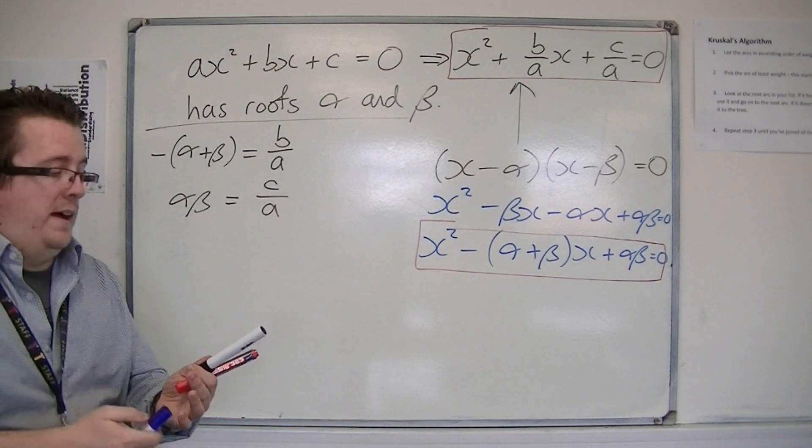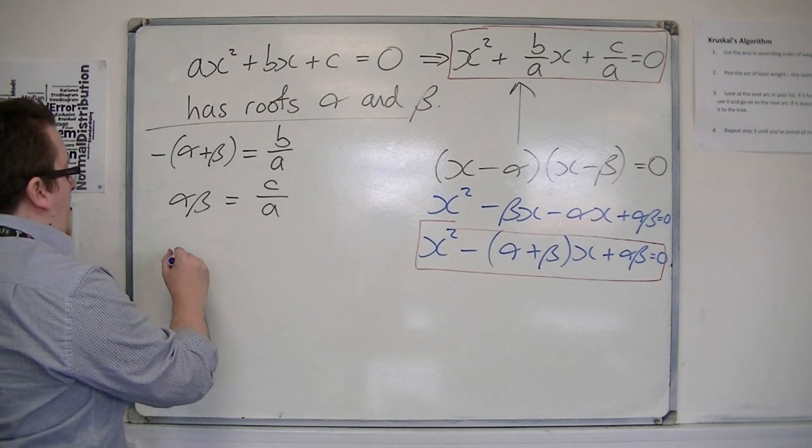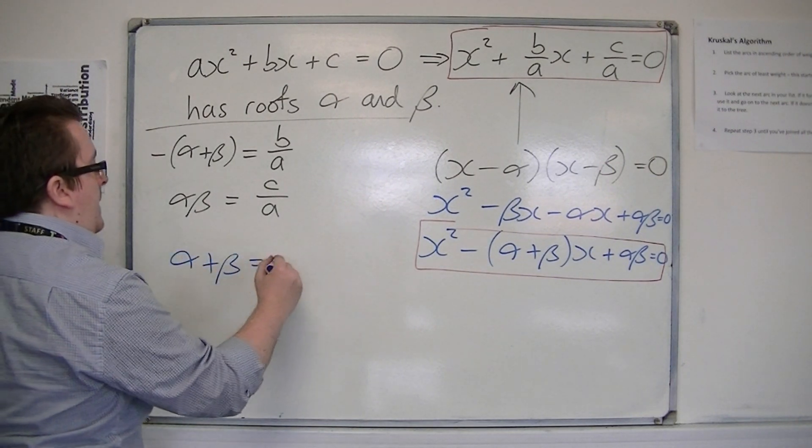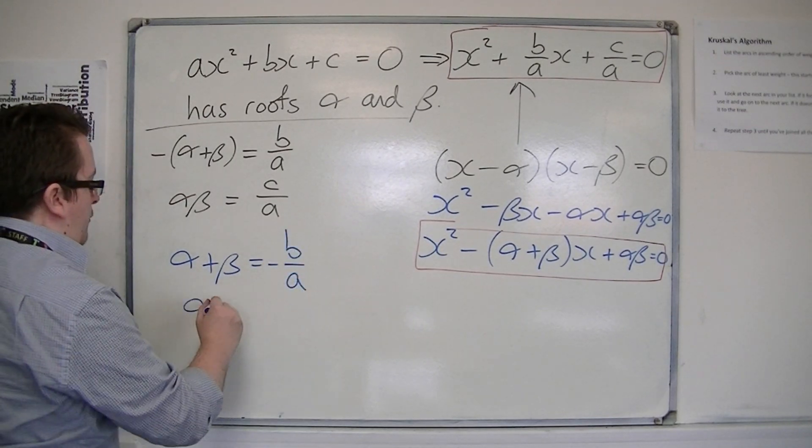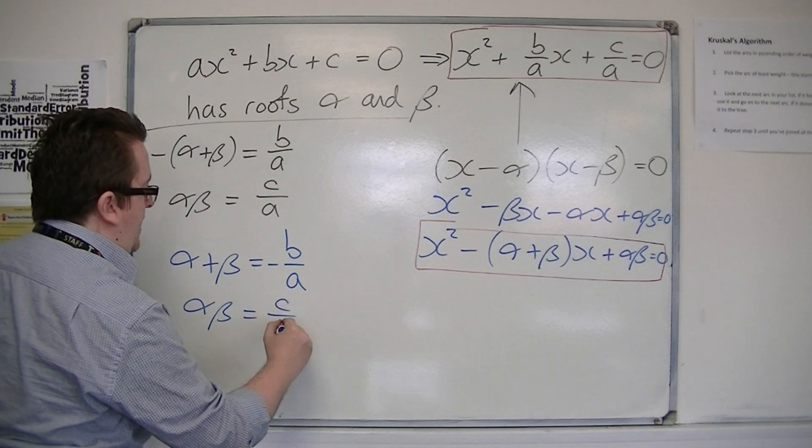So, from that, what we can say is that α + β is equal to -b/a, and αβ is equal to c/a.